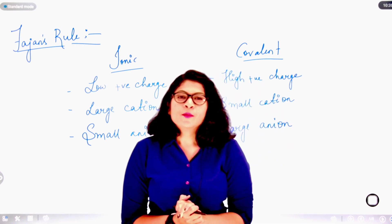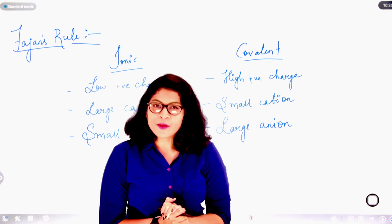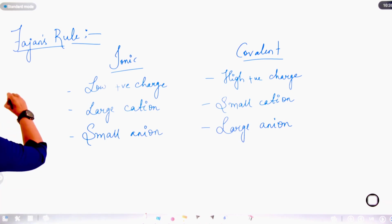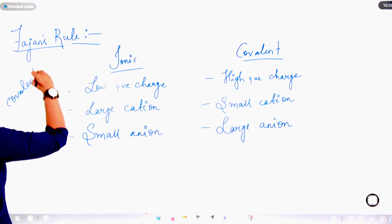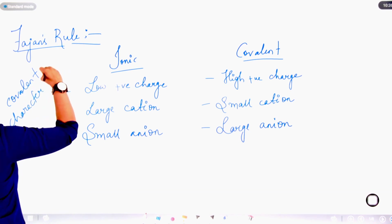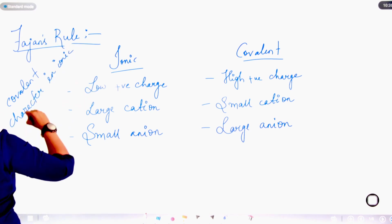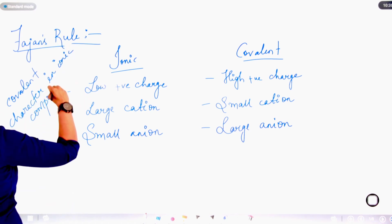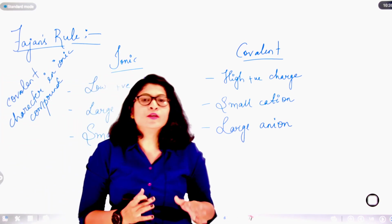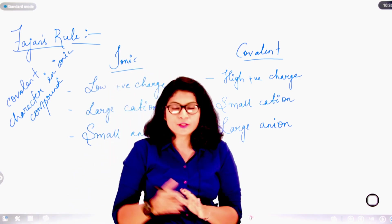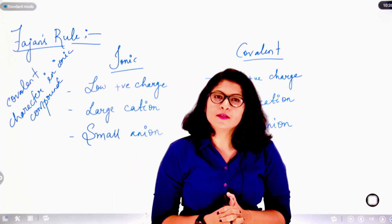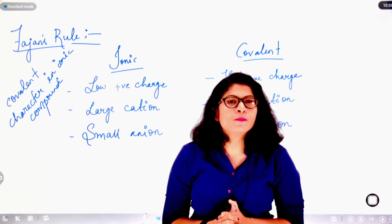In the previous lectures we were discussing Fajans' rule. Fajans' rule talks about covalent character in ionic compounds. No bond, whether ionic or covalent, is purely ionic or covalent. There is some percentage of covalent character in an ionic bond, and that was basically talked about by Fajans.